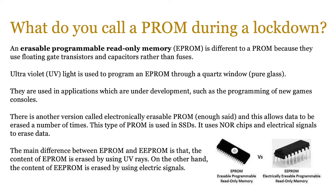There is another version called electronically erasable PROM (EEPROM), which allows data to be erased a number of times. This type is used in SSDs, using NAND chips and electrical signals to erase data. The main difference between EPROM and EEPROM is that EPROM content is erased using ultraviolet light, whereas EEPROM content is erased using electrical signals. You can see both chips side by side on the bottom right of your screen. Feel free to pause and do some more research online.